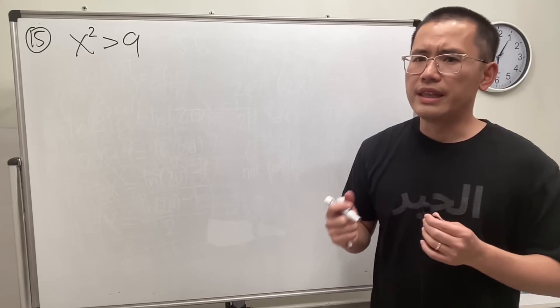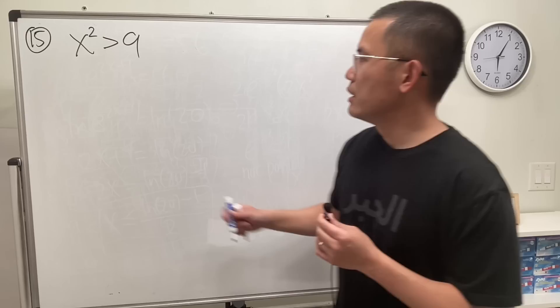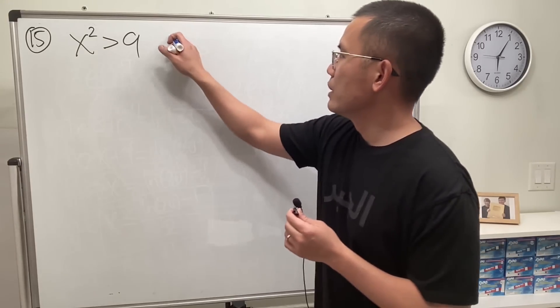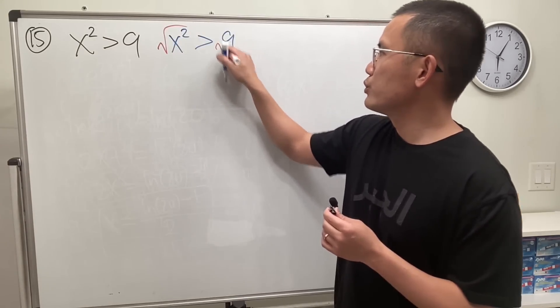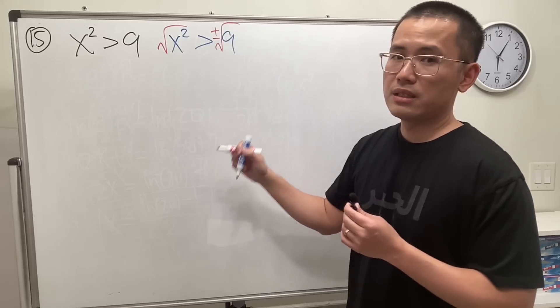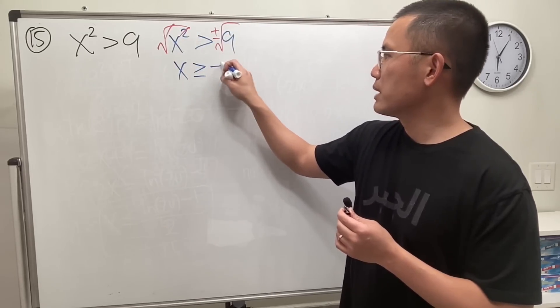It's just x squared is greater than 9. Let me tell you what not to do. It looks like x squared is greater than 9, why don't we just take the square root of both sides and put a plus or minus, then say x is greater than plus or minus 3.